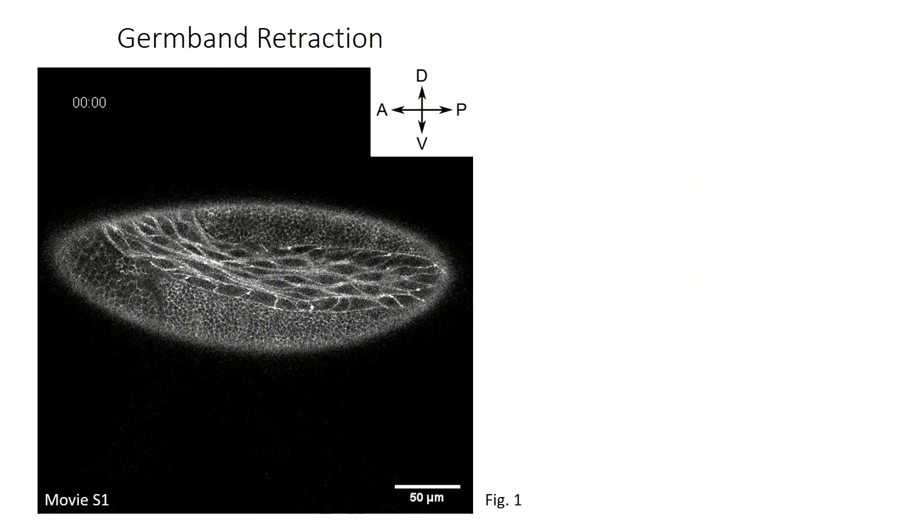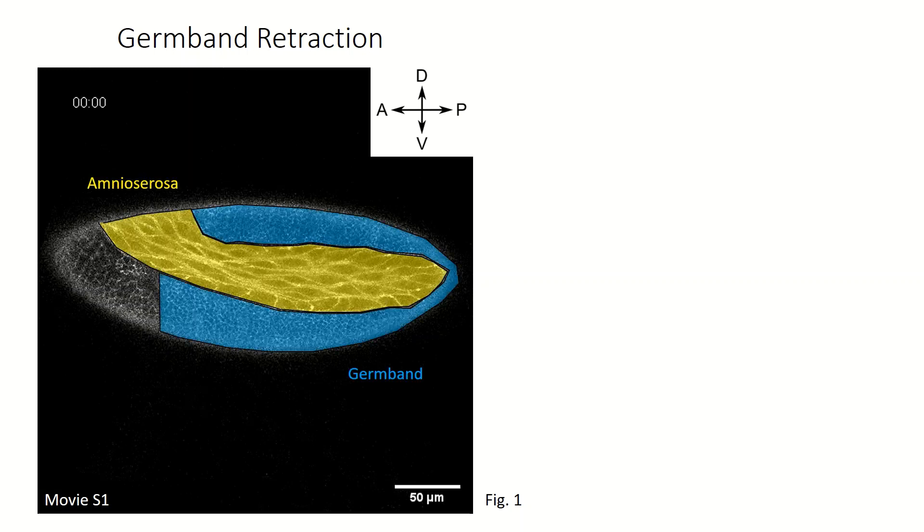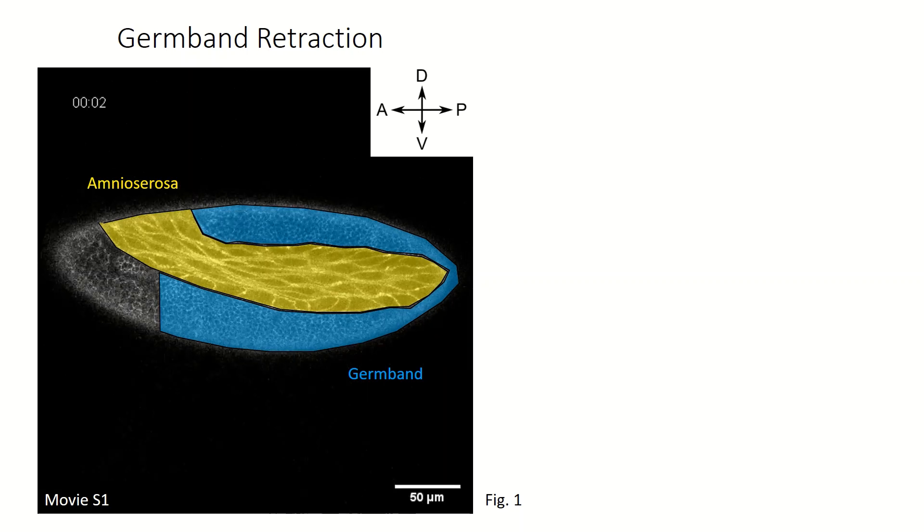Germband retraction involves two epithelial tissues, the amnioserosa and the germband. These two tissues are initially interlocked in U-shapes that uncurl during retraction.